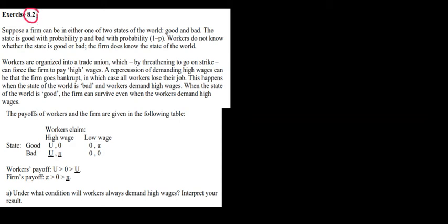Let's start working on question 2. We have a firm that can be in two states: good and bad — a good economy versus a bad economy. The probability of being in a good economy is P, and 1 minus P is the probability of being in a bad economy. That affects both the profit of the company and the utility of the workers, as given in this table.